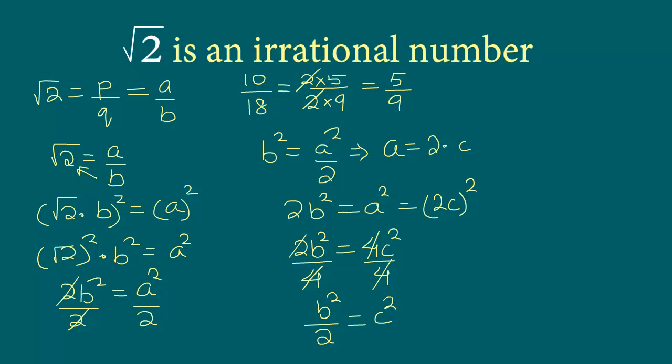Now we just now saw c is an integer. So then c square must be an integer. So that means b square by 2 must be an integer. Or in other words, 2 divides b square. That means we can say that the number 2 is a factor of b or we can write b as 2 times maybe some number d. All we are saying is that b contains 2 as a factor. Because only then b square is divisible by 2.